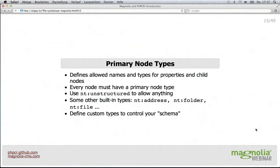A node also has a primary type. The idea is that it defines what kind of children and properties this node can have, allowing you to build your kind of database schema to control what structure can be put into your content repository. But contrary to typical databases, this is optional, so you can choose between unstructured or structured approach. You can use the 'nt:unstructured' type, which allows all kinds of children and properties, or built-in types that define what a file or folder representation should look like. You can also define your own custom types.